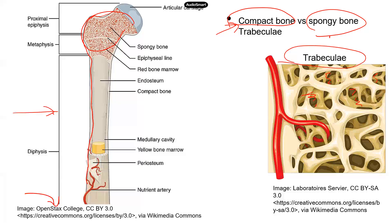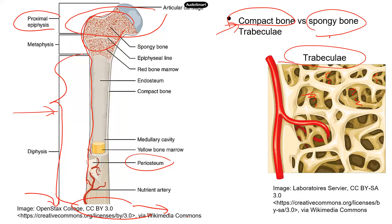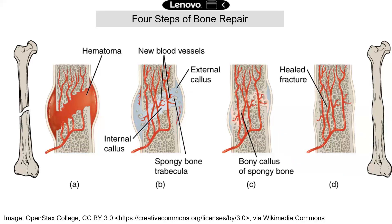A couple of structures: the end of the bone is called the epiphysis. The end closer to the trunk of the body is the proximal epiphysis, and the other end is the distal epiphysis. In the middle you have the diaphysis, which is the shaft. There is connective tissue on the outside of the compact bone, and that's known as the periosteum.